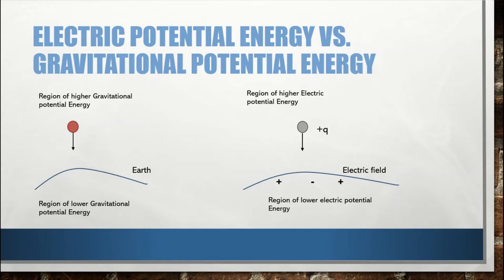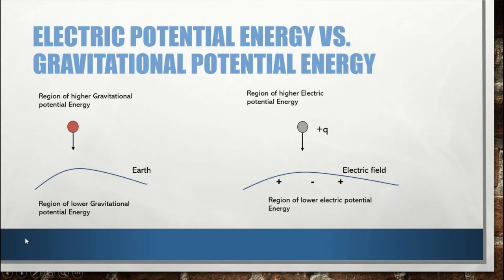For gravitational potential energy, this is the energy stored in a gravitational field. Consider a ball in the air near the earth — the region above is the region of higher gravitational potential energy because gravity pulls the ball downward. The region on the earth's surface is the region of lower gravitational potential energy. The same concept applies with the electric field.